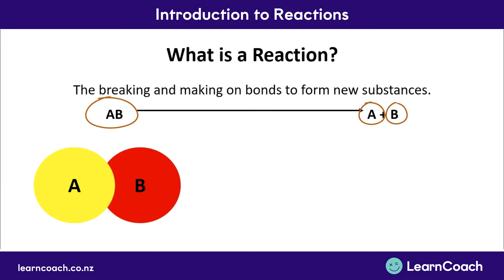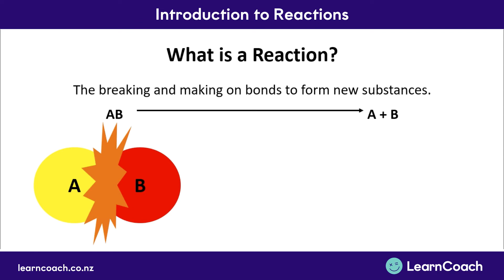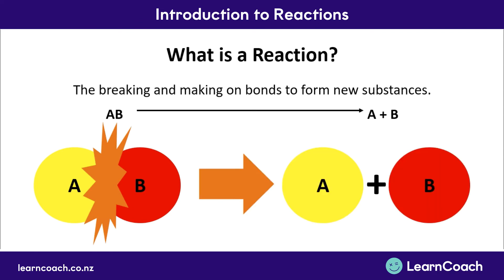Here is a simple example: compound AB being broken down into A and B. A compound is a substance made up of two or more elements. Our compound AB is made up of an A atom and a B atom. We break the bond between A and B, forming two new substances — element A by itself and element B by itself. A chemical reaction is the making and breaking of bonds to form new substances by rearranging atoms.